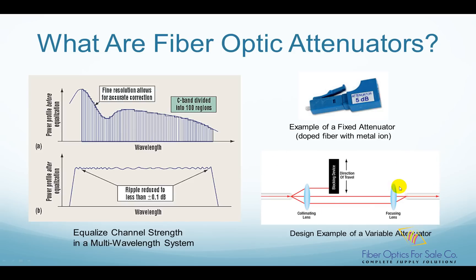This picture shows another mechanism using one type of variable attenuator. Here, variable means the attenuation level can be adjusted — for example, from 1 dB up to 20 dB. In this example, the light from the input fiber is expanded into a larger beam by the first collimating lens. Then, a blocking device, which could be a neutral density filter, is inserted into the light path to partially block the light, so only part of the light can pass through.